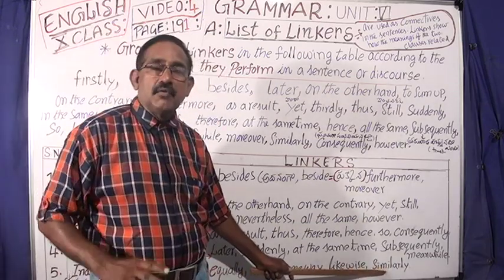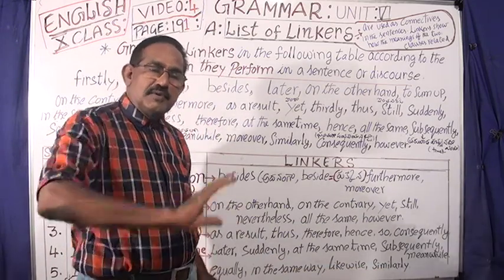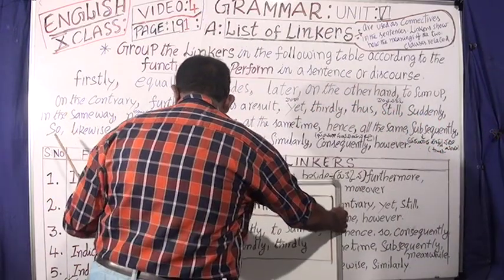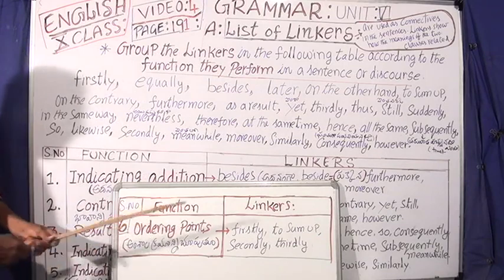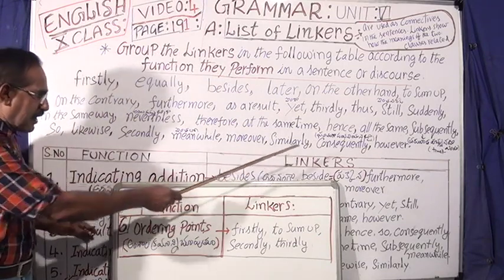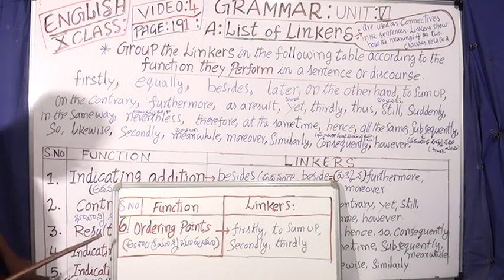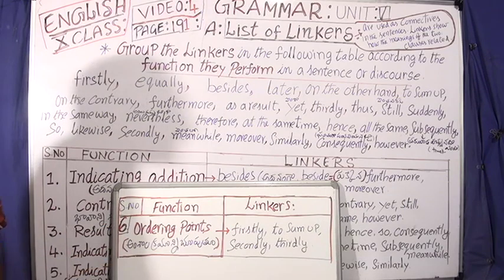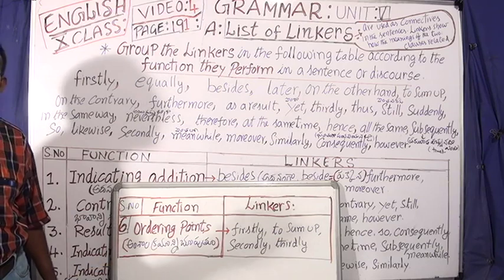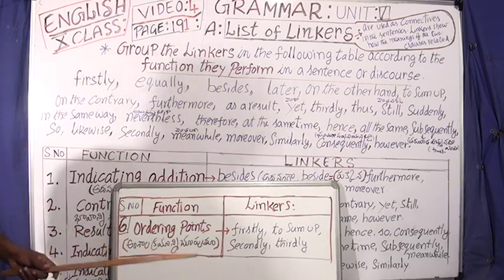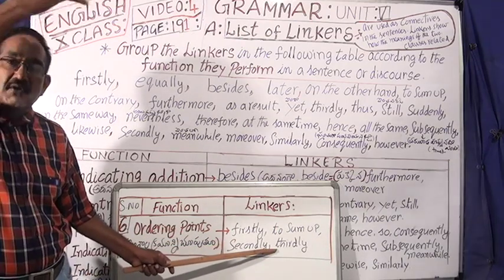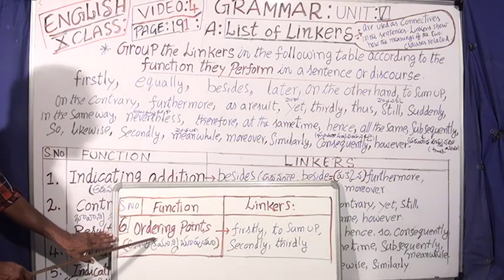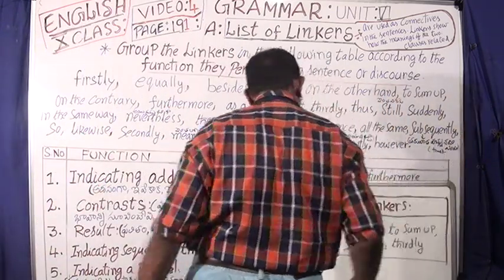Similarly. This is the ordering points. Step-by-step — firstly, secondly, to sum up. That is the ordering points. Firstly, to sum up, secondly. There is a link in the description — it is available to you in the description of the link.